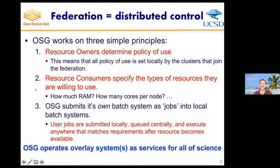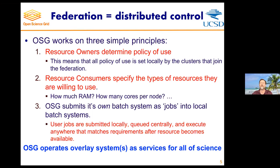Inversely, resource consumers specify the types of resources they're willing to use — how much RAM, how many cores — but also, for example, 'I don't want to work with a particular site because I don't trust them.' A resource consumer at any moment in time can decide 'I want to only use this' or 'I want to be maximally promiscuous and use anything under the sun to get the largest possible throughput.' Our job is to match the policy expressed by the owner with the policy expressed by the consumer, and science happens.